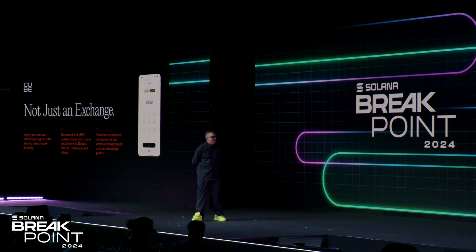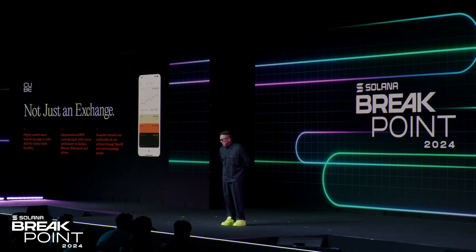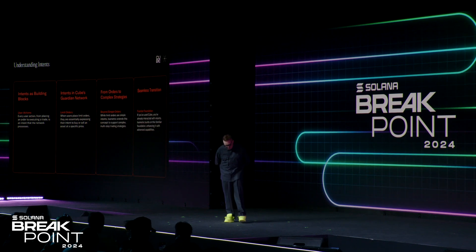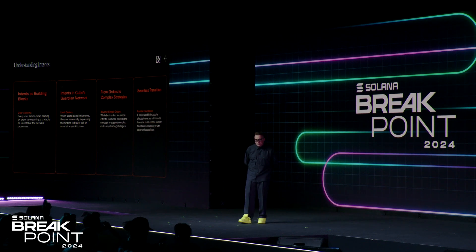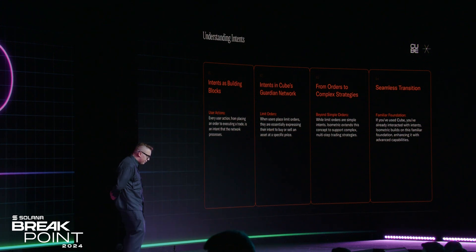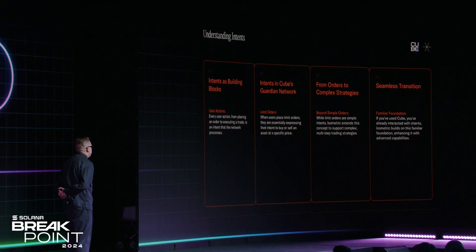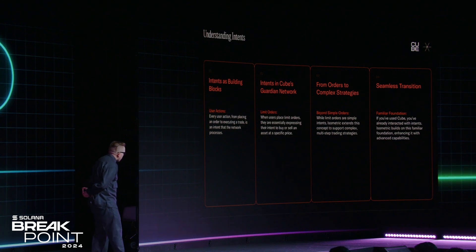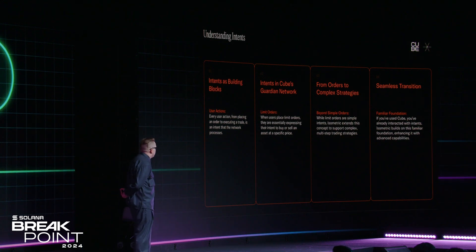But I'm not here to talk about the exchange we built. What I wanted to talk about is the next part of our journey, which started with intents. When we started building Kube, we wanted everything to be an intent. Every single order that you submitted over the last year on Kube was an intent — a signed object that you submit to a layer one that we are running, which then executes through our network and settles to layer ones. Through that, we can execute multiple complex strategies.